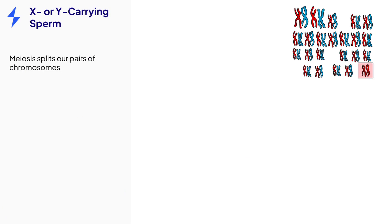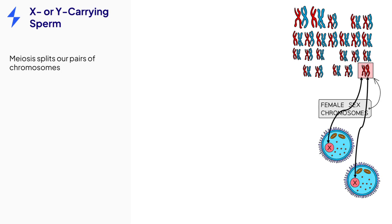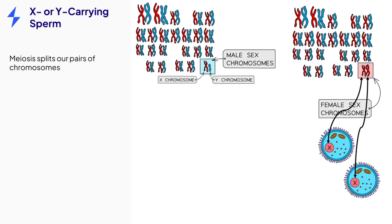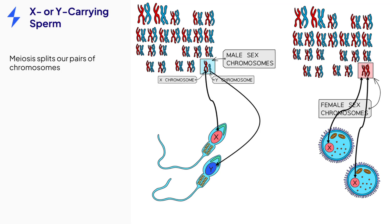When a female makes her eggs during meiosis, she splits all her chromosome pairs. Each egg receives an X chromosome. However, when a male produces sperm, he also splits his chromosome pairs. Half of the sperm cells receive an X chromosome, the other half receive a Y. So we say that each sperm is either an X-carrying sperm or a Y-carrying sperm. Only one of these sperm will win the race to the egg and fertilise it, and this is what determines the sex of the embryo.